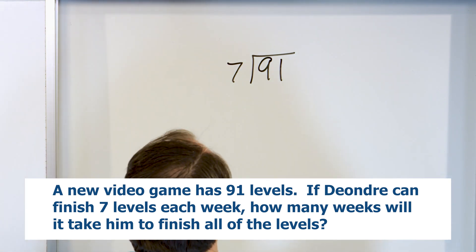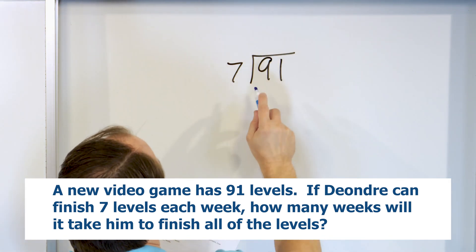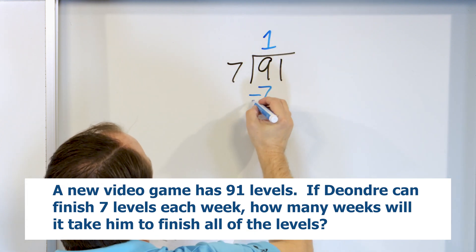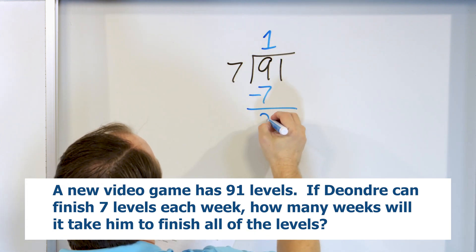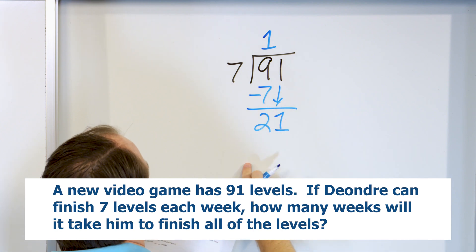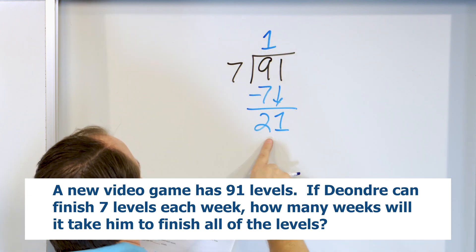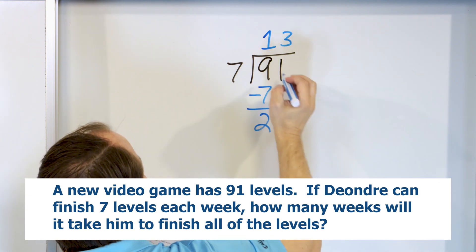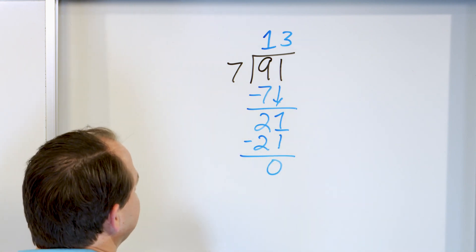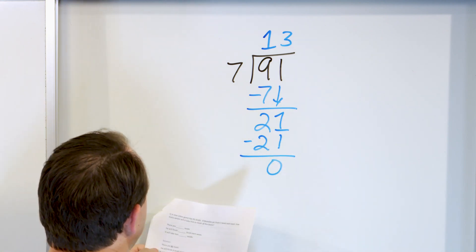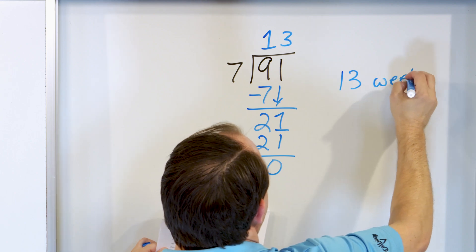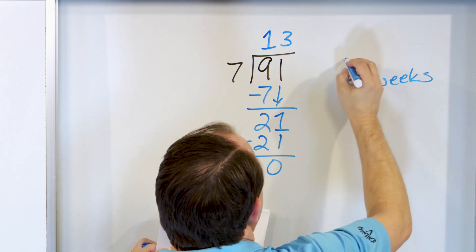So we try to divide. Seven times what is nine? The closest I can get is one. Seven times one is seven, subtract, and I get a remainder of two. Drop down — now I have 21. Seven times what is 21? Three. Seven times three is 21. Subtract, remainder zero. So the answer is 13 weeks.